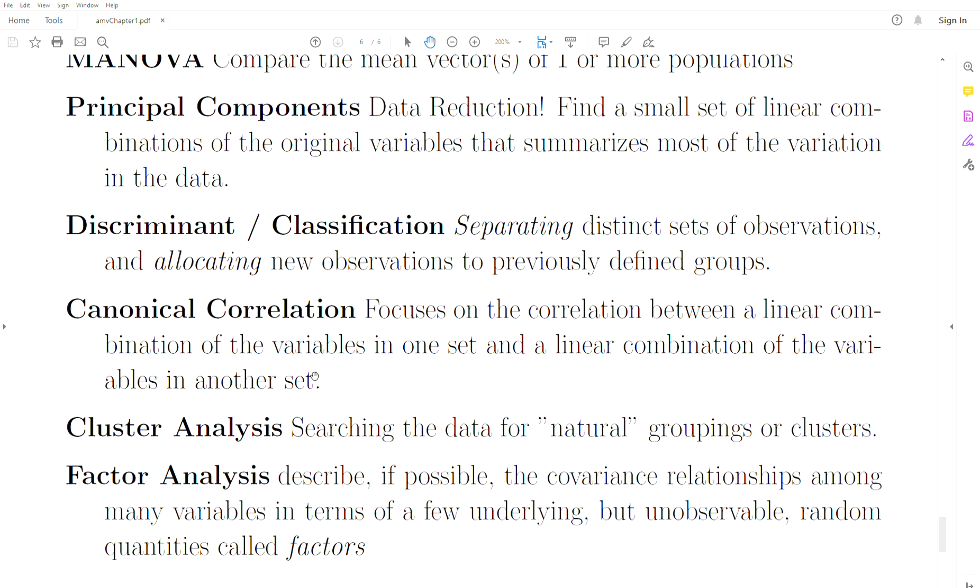Canonical correlation is how well two sets of variables correlate with each other - linear combinations of those variables.